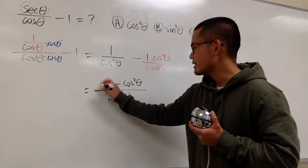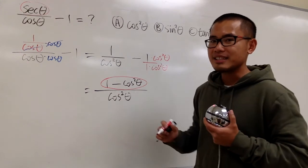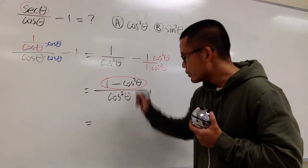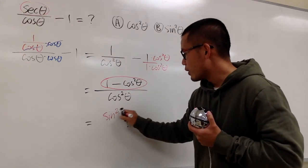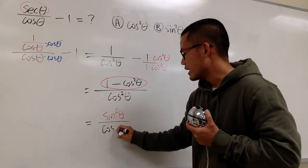Well, notice, 1 minus cosine squared theta, it has an identity for that. This is equal to sine squared theta, and then over cosine squared theta.